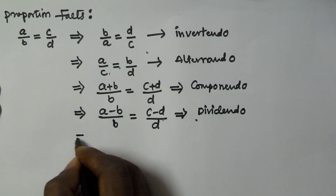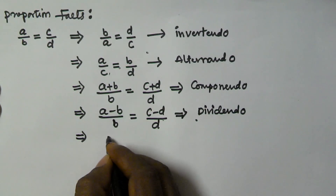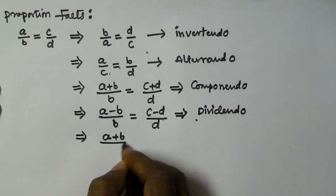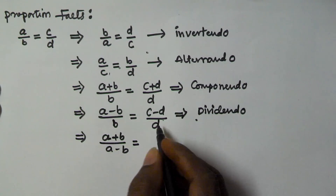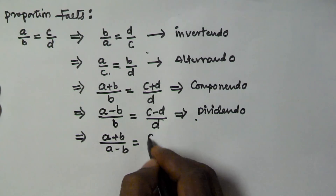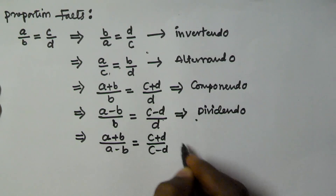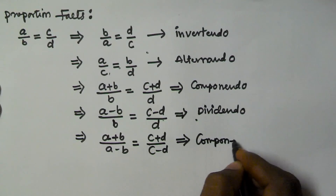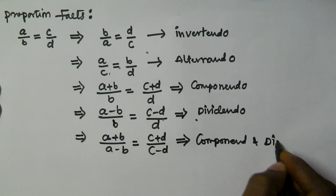And the same proportion can also be written as A plus B by A minus B is equal to C plus D by C minus D. So this is called as componendo and dividendo.